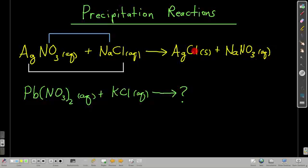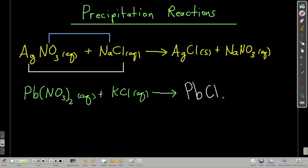If you do that and everything on the product side is aqueous, then nothing happened — it's no reaction, no change. Let's look at another example: lead(II) nitrate — soluble because of the nitrate — and potassium chloride — also soluble. The products are lead(II) chloride, which is insoluble, and potassium nitrate, which is soluble. We still need to balance it by putting a 2 in front to account for the 2 chlorides and 2 potassiums. Now it's balanced.